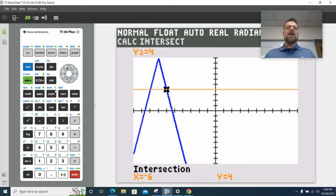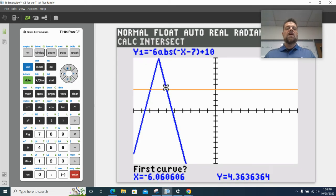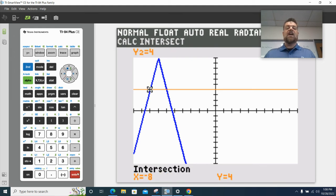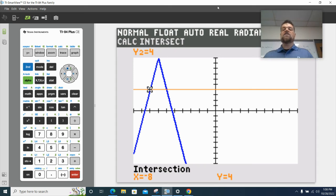Now to do the other one, I have to start from scratch. I'm going to hit second trace, go down to intersect. And now I'm going to move my cursor. Will you guys get that door real quick? I got to move my cursor pretty close to this intersection. I'll do this. Settle down. Just let them in. And negative eight. So my solution is negative eight and negative six.